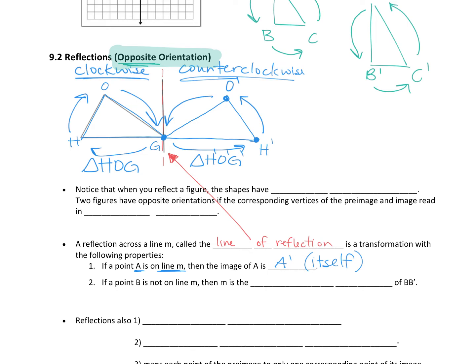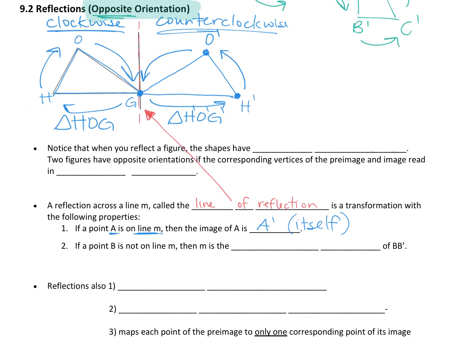Reflections will always have opposite orientation — they will never have the same orientation. Now, if it reflects and reflects again it would end up being the same, but that's actually called a rotation, which we'll talk about later. Notice that when you reflect a figure, the shapes have opposite orientation. Two figures have opposite orientations if the corresponding vertices of the pre-image and image read in opposite directions — one is clockwise and one is counterclockwise.